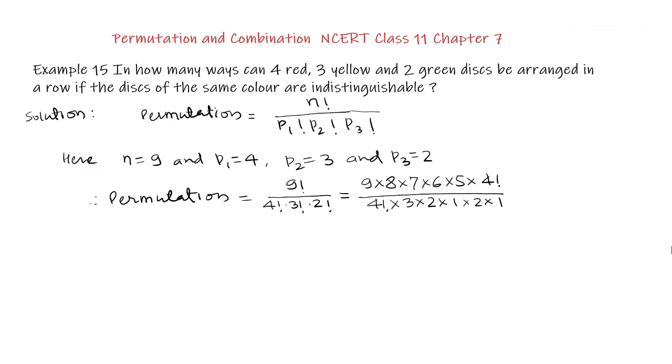So we cancel the 4 factorial of numerator by 4 factorial of denominator. And we cancel 3 × 2 by 6 and 2 cancels the 8 of the numerator by 4.